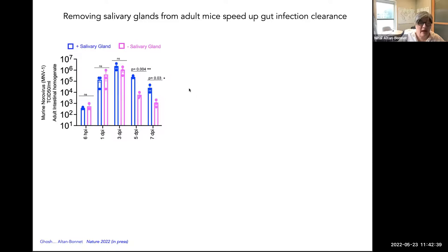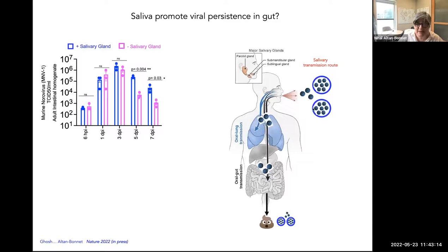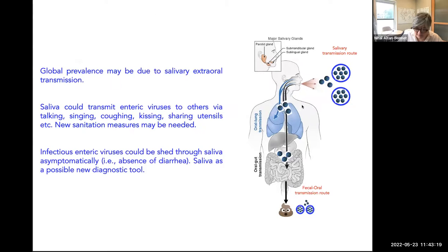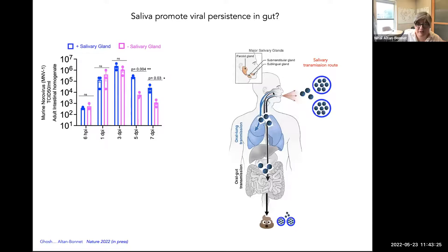We did a technically challenging experiment where we removed the submandibular salivary gland from mice — we couldn't remove all of them — then inoculated these mice with norovirus and asked what happens to the gut infection. What we observed is that when the salivary glands had been partially removed, the gut infection cleared faster. This is really intriguing because it potentially indicates that the saliva produced with viruses inside, when swallowed, could promote the persistence of these viruses in the gut — the saliva could increase reinfection of the gut.